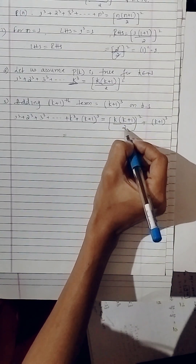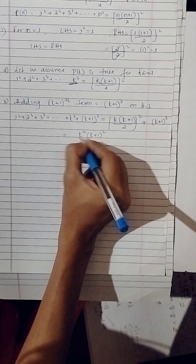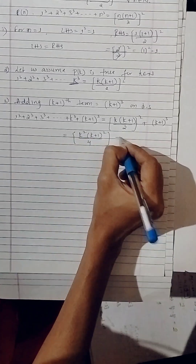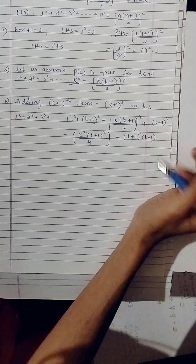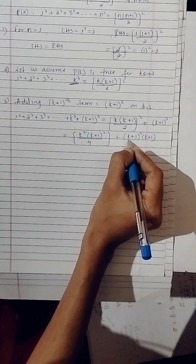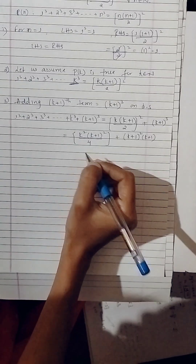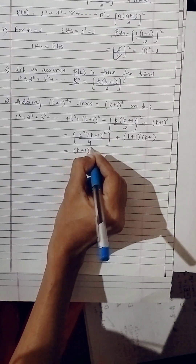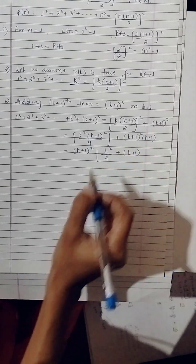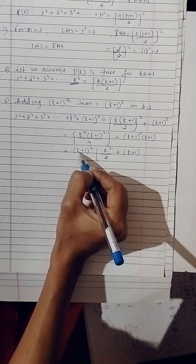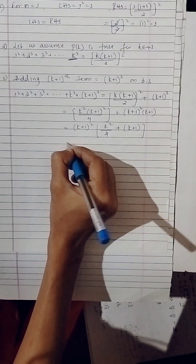Now simplify the RHS. The term k into k plus one upon two, bracket square, gives k squared times k plus one whole squared divided by four. The second term k plus one cube can be split as k plus one squared times k plus one. We can take k plus one squared as common from both terms, giving k plus one squared times the quantity k squared divided by four plus k plus one, and simplify using the LCM method.